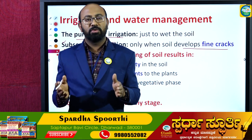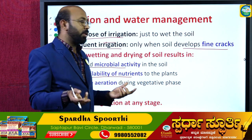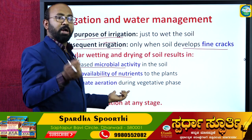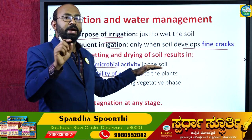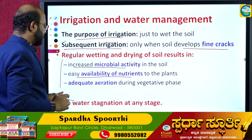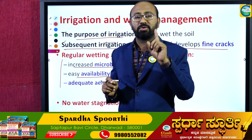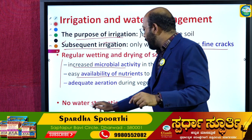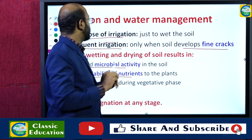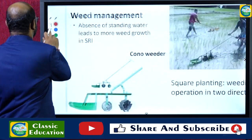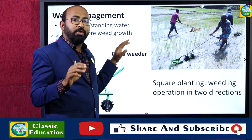Regular wetting and drying of the soil results in increased microbial activity. Stagnating water for a long time reduces microbial activity by creating anaerobic conditions under which microorganisms cannot survive. With proper aeration from alternate drying and wetting, microbial activity is enhanced and nutrients are more available. During the vegetative phase, proper aeration ensures good root system development. At any given stage, water is not allowed to stagnate — this is a very important point in SRI.